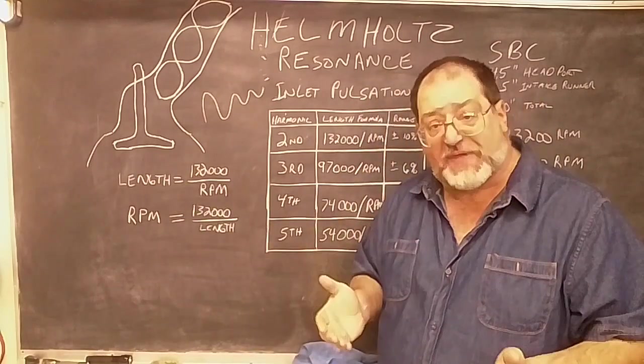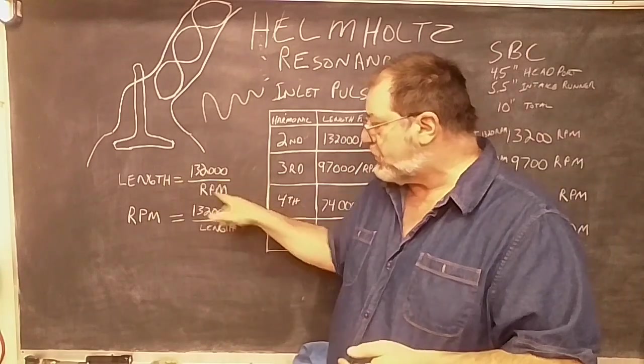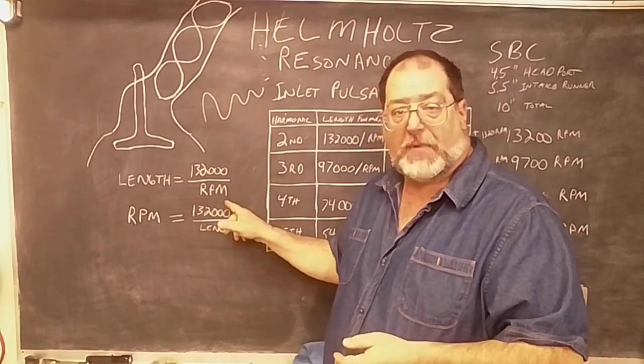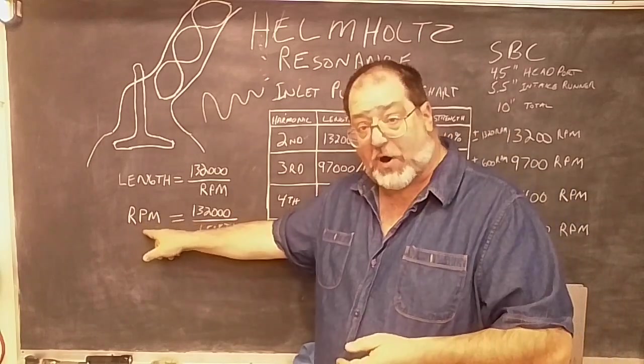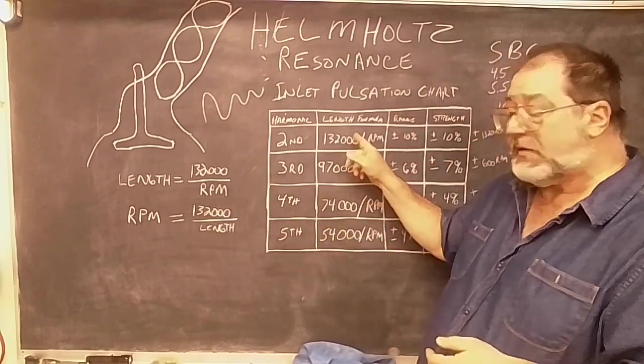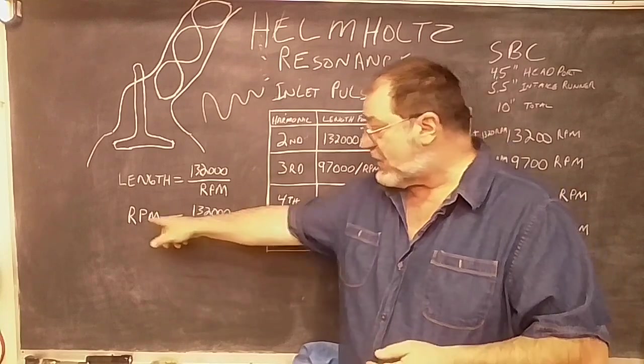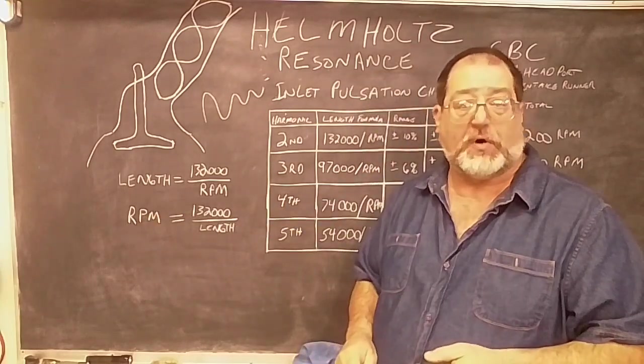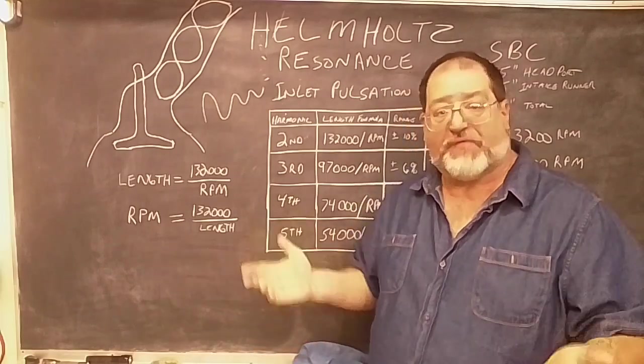Now, if you want to turn that around, that's very easy to do. You can just substitute these two portions of the formula. So, solving for RPM, you are going to just strictly take the harmonic and divide it by the length you have, and that will give you the RPM that it's tuned for. And so you can kind of take what you have and see where you fall.